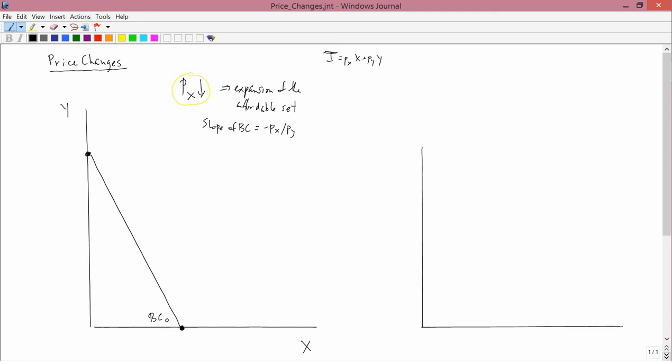This point in the lower right represents what happens if you don't buy any Y, just spend all your money on X. If you spend all your money on X, the amount of X you can buy is I over PX. Similarly, if you don't buy any X and only Y, then the amount of Y that you can buy is I divided by PY.